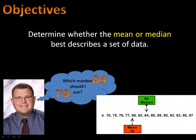Finally, we'll be able to answer Mr. Weller's question. Which is the best number to describe our data set? The median of 84 or the mean of 79?